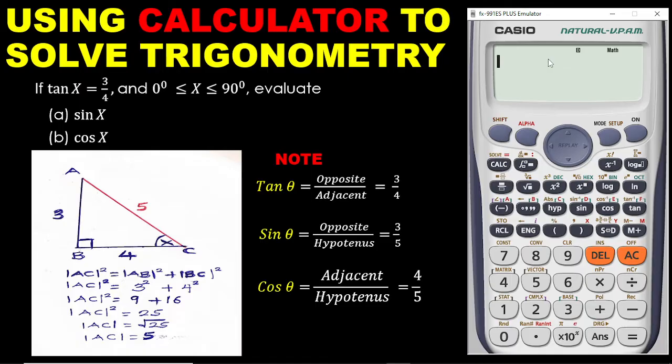So now how do we use the calculator to solve questions involving trigonometry? To do that, you must always remember to clear your calculator. And to do that, you press shift, you press 9, you press 3, and then it's equal to. Then your calculator is cleared. So, the step for clearing: shift, 9, 3, and then it's equal to. Then you have cleared the calculator.